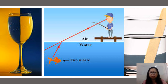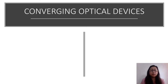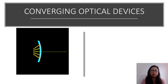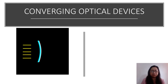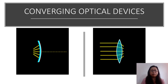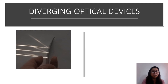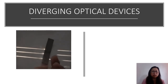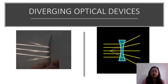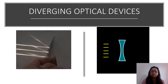Let us compare the difference between converging and diverging optical devices. Converging optical devices allow light to meet at one point. For a concave mirror, when light strikes the surface, the reflected rays meet at a point in front of the mirror. A convex lens refracts light so rays meet at a point behind the lens. Diverging optical devices scatter light. A convex mirror reflects light away from each other. A concave lens scatters light away from the center of the lens.